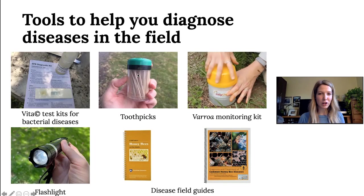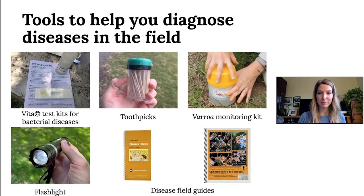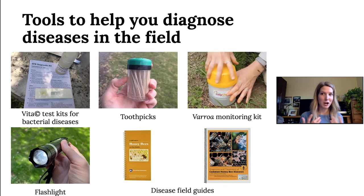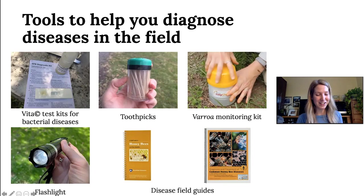Sometimes we want to look a little closer underneath chewed cappings, or pull out any larvae or pupae that look suspicious to see what's going on. A toothpick is a perfect tool for that. A varroa monitoring kit is always key. As I'll talk about in this video, sometimes we have brood issues due to having high levels of varroa in the colony, and being able to monitor our levels can help us realize it's actually a varroa issue, not something like European foulbrood.